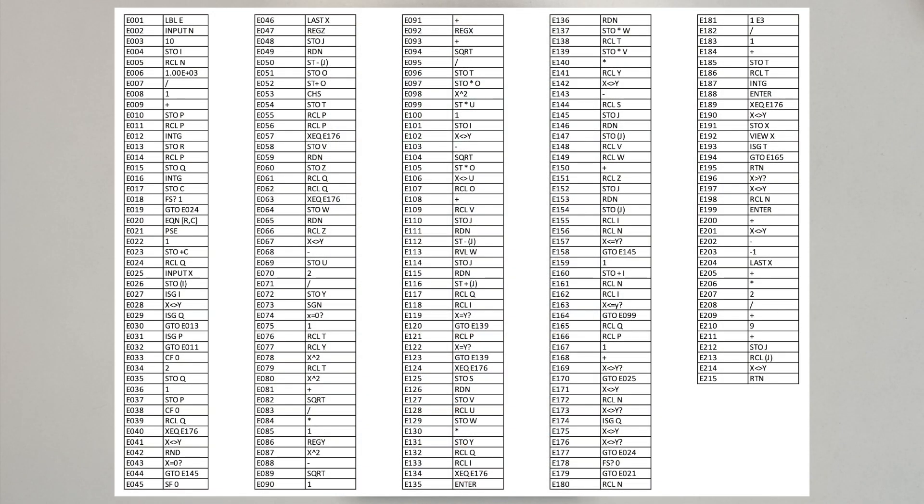The 35S program is currently 215 steps, which is the same as the original 41C version. Although additional steps were required to work around the 35S limitations, the available memory check was not required and removed.